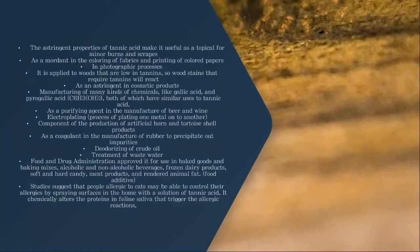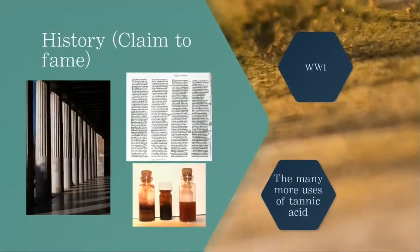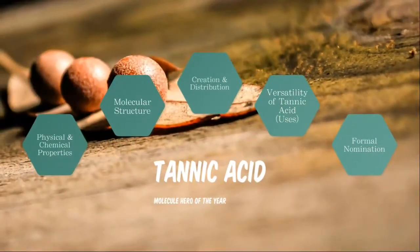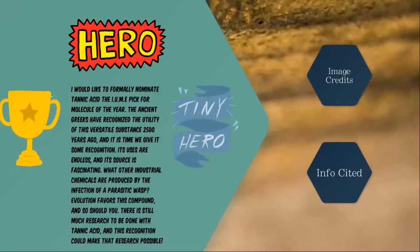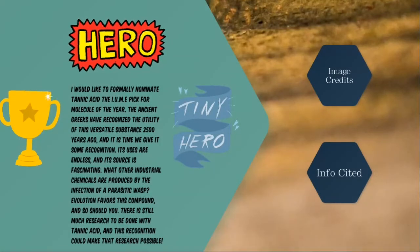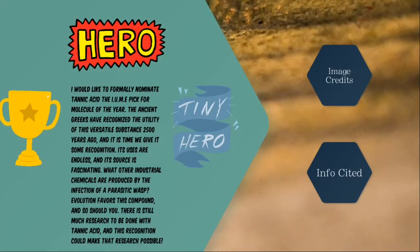It has many other uses. Some common ones are to stain wood, as an astringent in cosmetic products, and treatment of wastewater. One really interesting use: studies suggest that people allergic to cats may be able to control their allergies by spraying surfaces in the home with a solution of tannic acid. It chemically alters the proteins in feline saliva that trigger the allergic reactions. That is why I would like to formally nominate this very versatile compound, tannic acid, as the International Union of Molecular Enthusiasts' pick for Molecule of the Year. The ancient Greeks have recognized the utility of this versatile substance for 2,500 years, and it's about time we give it some recognition.